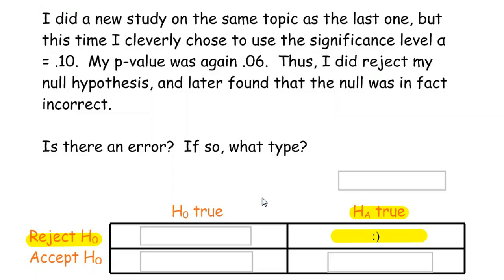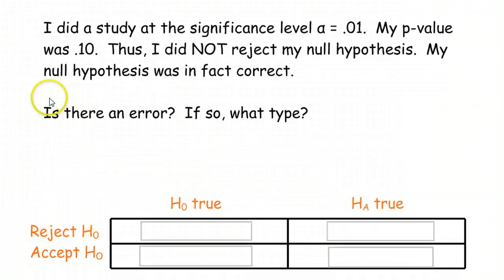Does that mean you should always make your alpha level higher? No, absolutely not. It increases your chance of a Type I error if you make your alpha level higher. So, it's kind of a trade-off that you're working with.